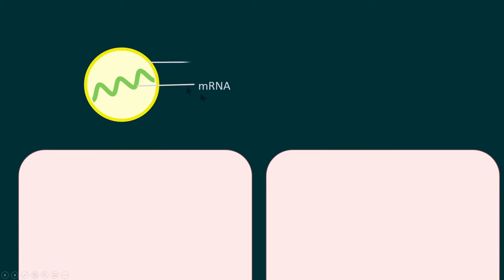Here is the mRNA and here is the lipid nanoparticle. The function of the lipid nanoparticle is: number one, it will protect the mRNA from RNases, the RNA-digesting enzymes. Secondly, it will responsibly and safely transport the mRNA into the cell.